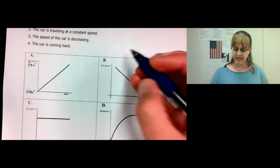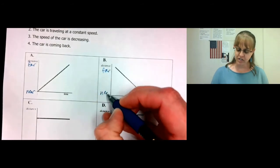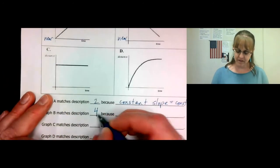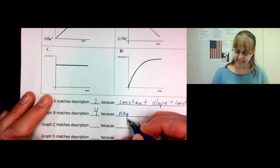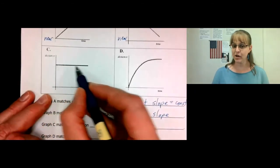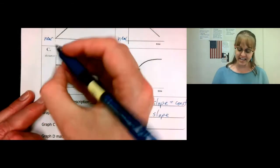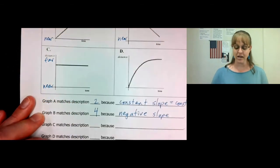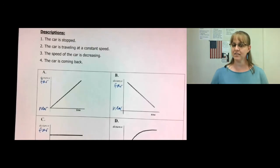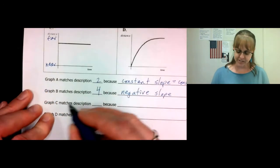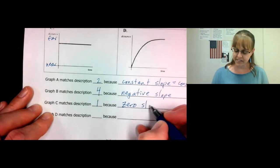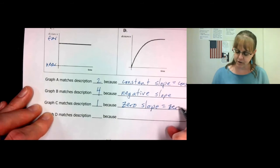Graph B — the car is moving from far to near at a steady pace. So the car is coming back. The reason it's coming back is because there is a negative slope. Graph C has zero slope, so it has zero speed. It is not getting any further away, it is not getting any nearer. Therefore, it is not moving. So graph C matches description one — the car has stopped — because there is zero slope, which means zero speed.